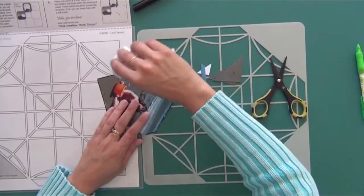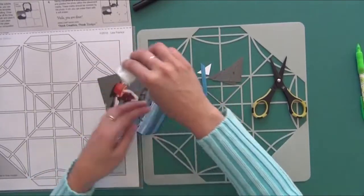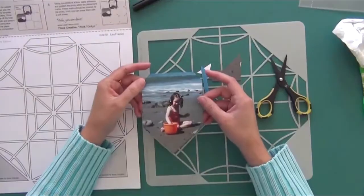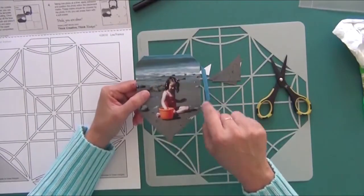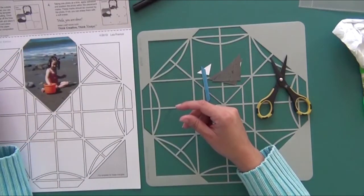Then you erase your line. Once you erase all your lines on your photo, you just place your cut photo in the corresponding place.